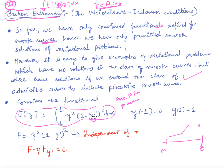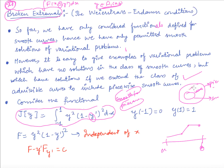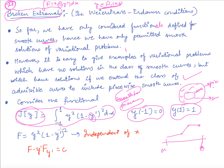If we input y only from the smooth class, we will not get any extremum. But if we enlarge the class to piecewise smooth functions, we may find the extremal there. Consider this extremal problem: find the extremal of the functional ∫_{-1}^{1} y²(1 + (1 - y'²)²) dx, where the boundary conditions are y(-1) = 0 and y(1) = 1. Let's write down Euler's equation.